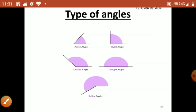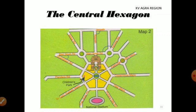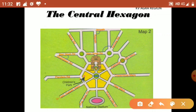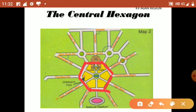Let's move to our next map. In the next map, you can see the area around India Gate. Look at this structure. If you look more closely at one part of the map, it looks like a six-sided shape, which is also called a hexagon — you have read about hexagons in Chapter 2, Shapes and Angles. Due to this shape, this place is called the Central Hexagon.